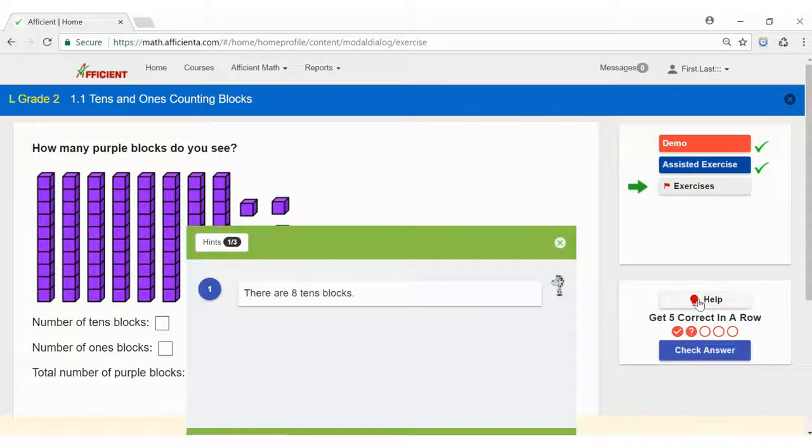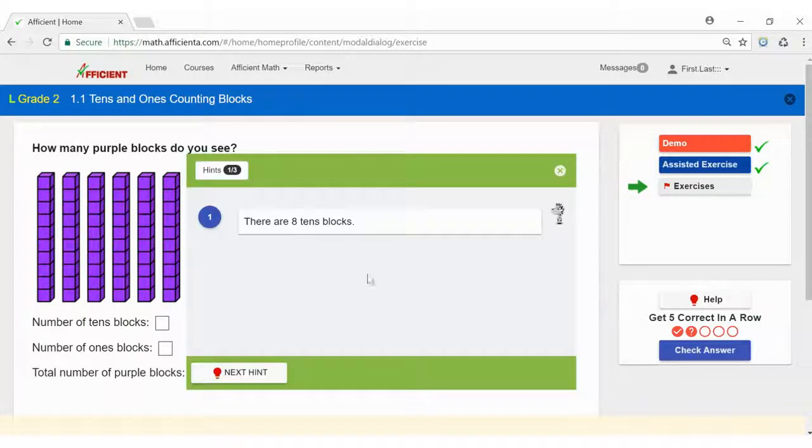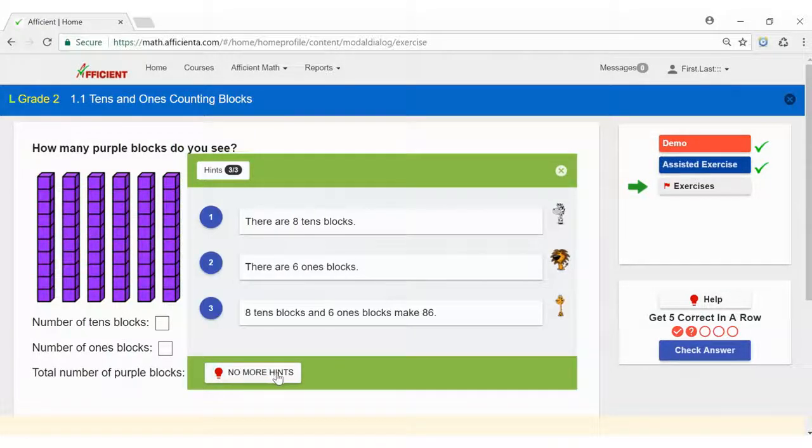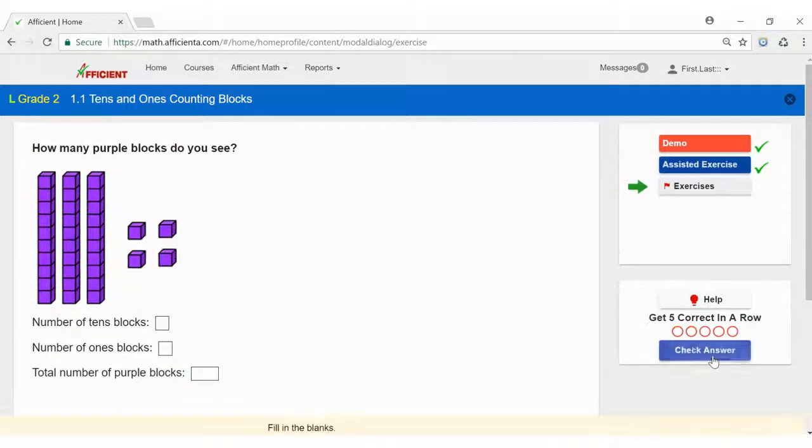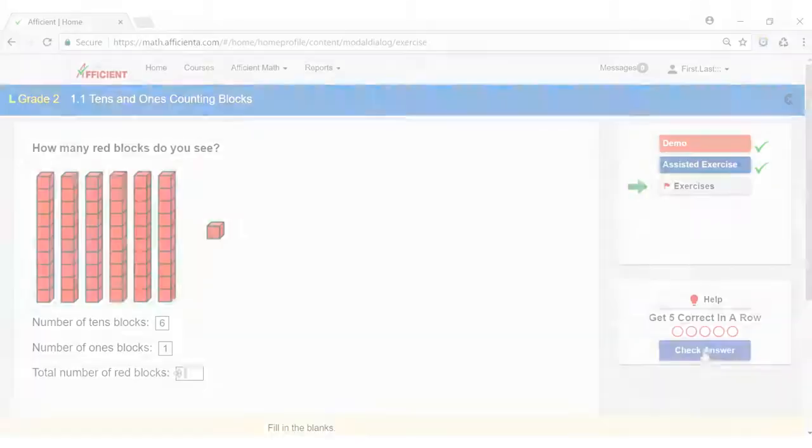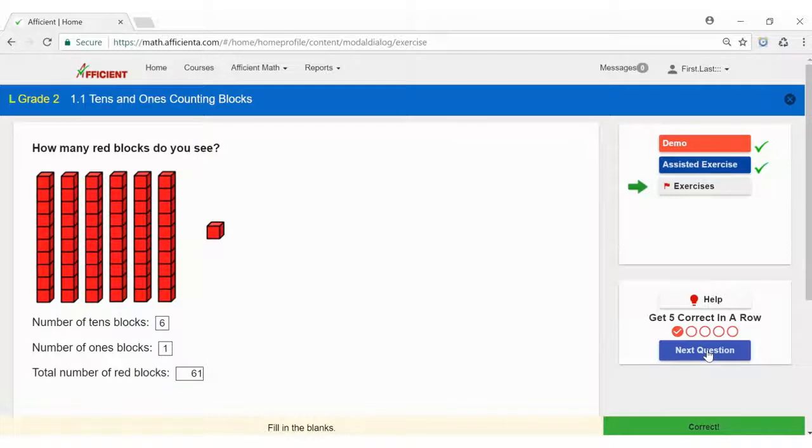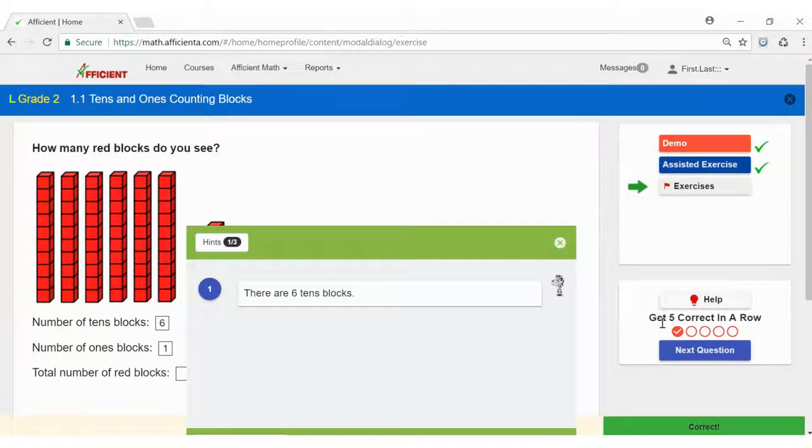If you're still stuck, you can click help. Clicking help will count the problem as incorrect and you'll have to start again. However, you can click help after answering the question with no penalty to compare steps and see how it's done.